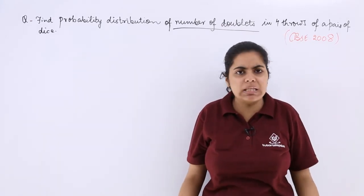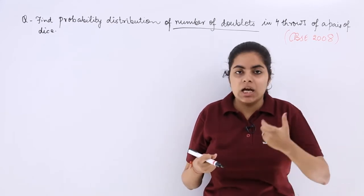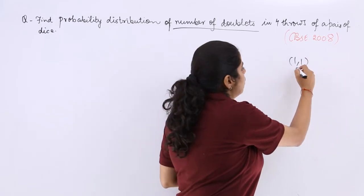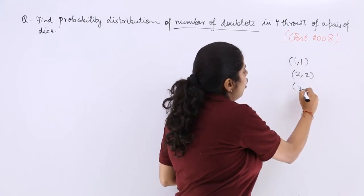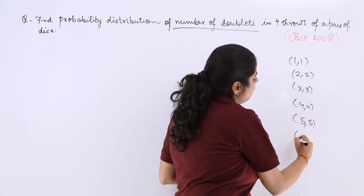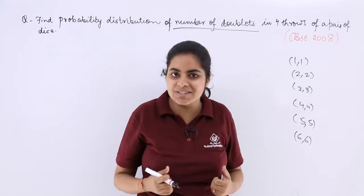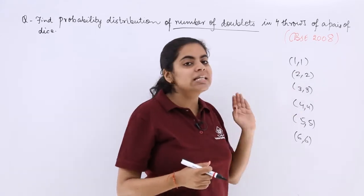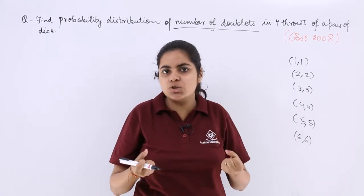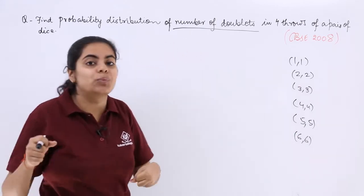So four throws means n is four independent trials. Next, doublets means you get either one-one or two-two or three-three or four-four or five-five or six-six. That means both numbers should be same on the pair of die that you're considering. So how many cases in all? Six cases out of the 36. So the doublets is favorable to me, so it is success for me. So P is one over six.